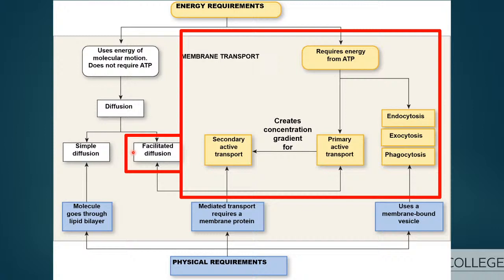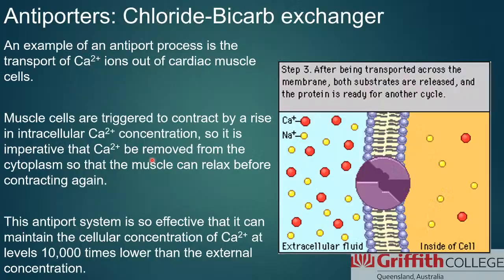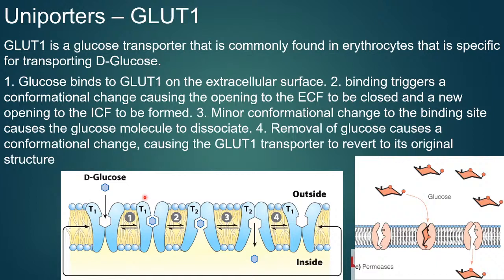We've now covered simple/passive diffusion and facilitated diffusion — both movements of substances that do not require energy and do not require ATP. Just to clarify: the transport process itself doesn't take energy, but it does take energy to create the transporter protein through transcription, translation, and protein synthesis. We need energy to make it; we just don't need energy to use it.